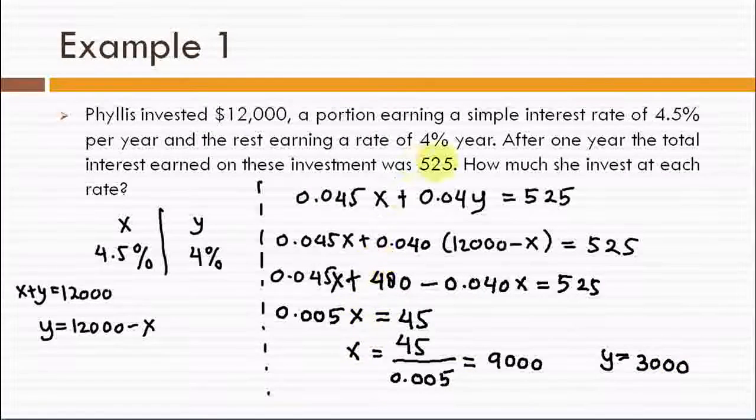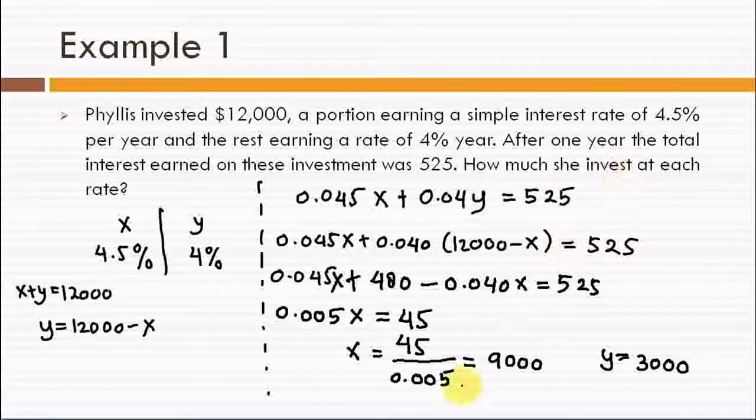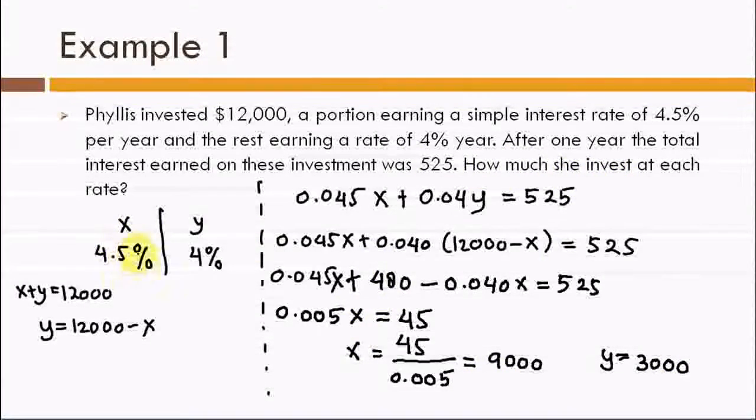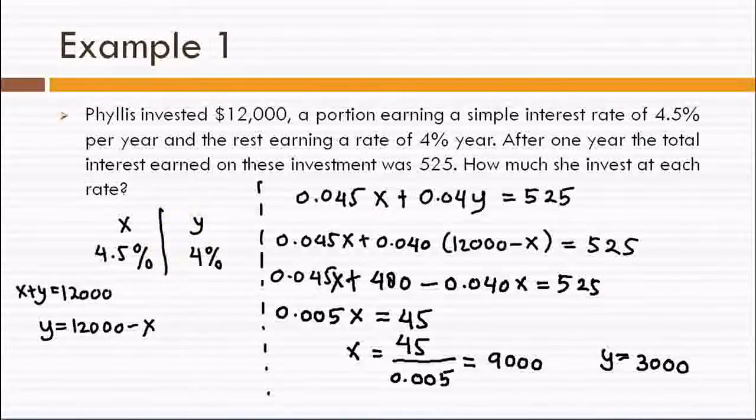So the solution is, we invested 9000 at rate 4.5% and 3000 at rate 4%.